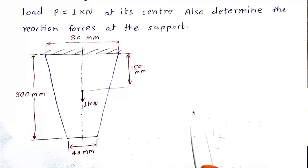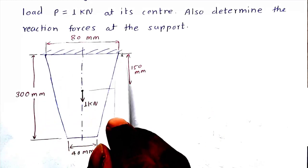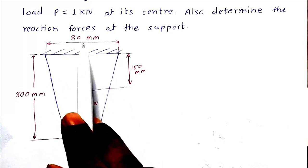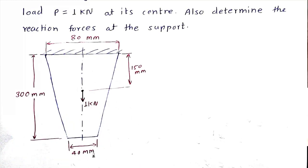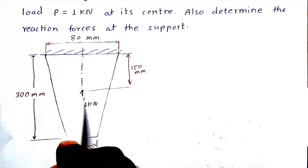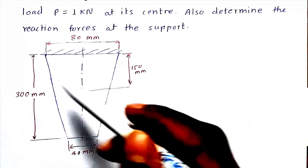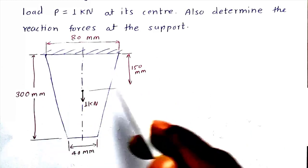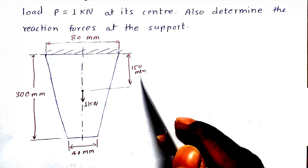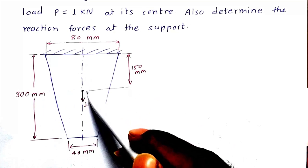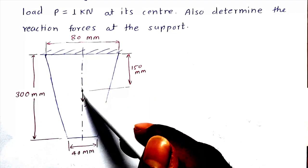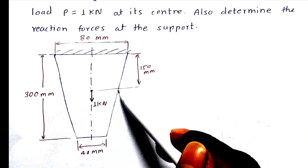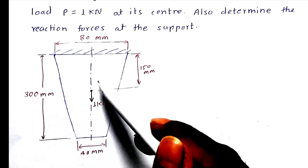To calculate that, we should know the length at the ends. At the support end the width is 80 mm and at the bottom the width is 40 mm. But we don't know the width at the center point. Since the total length is 300 mm and the midpoint is at 150 mm, it is exactly half. So at the center point, as the widths are 80 and 40, it will be the average of both.